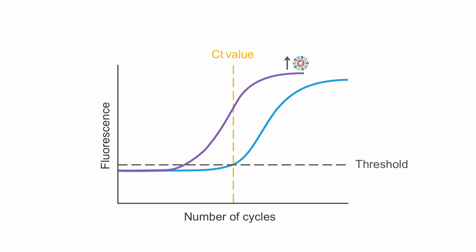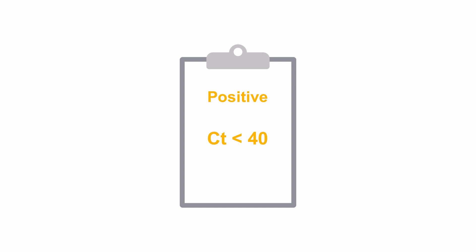The lower the CT value, the more RNA was present in the original sample, indicating a higher viral load. For SARS-CoV-2, a CT value of less than 40 is considered a positive test. If the result is positive, it is also important that the CT value be reported, since this indicates the patient's viral load or infectiousness.